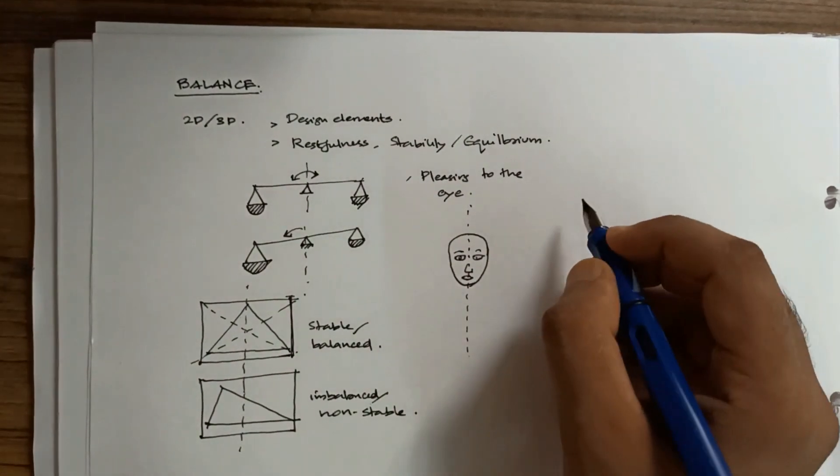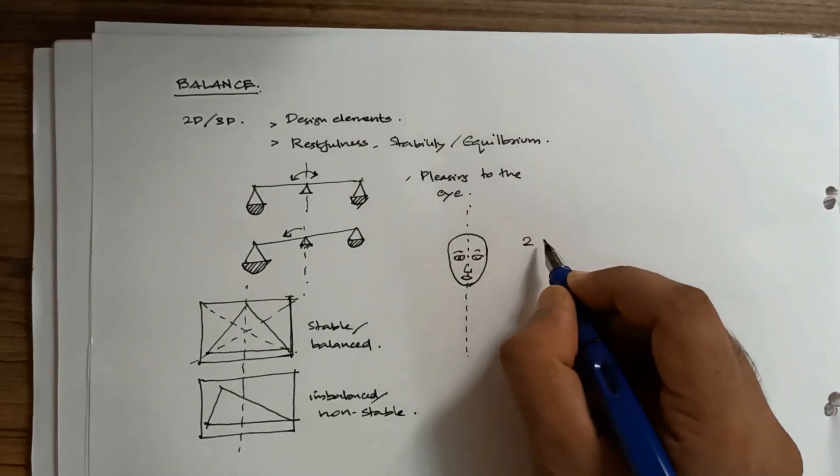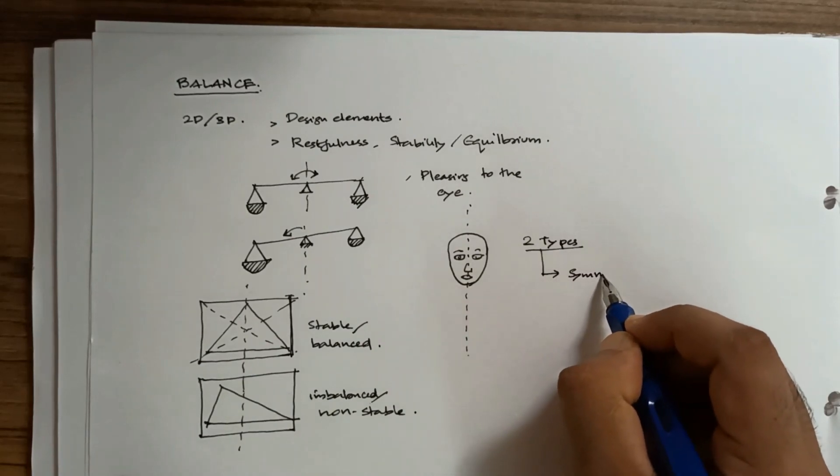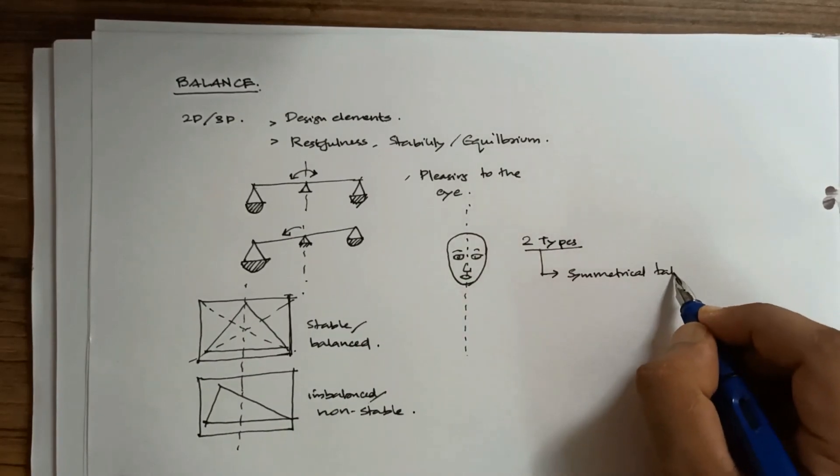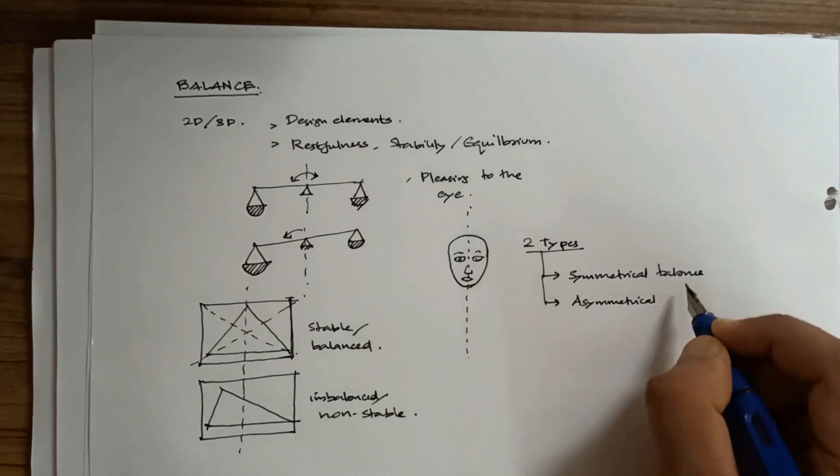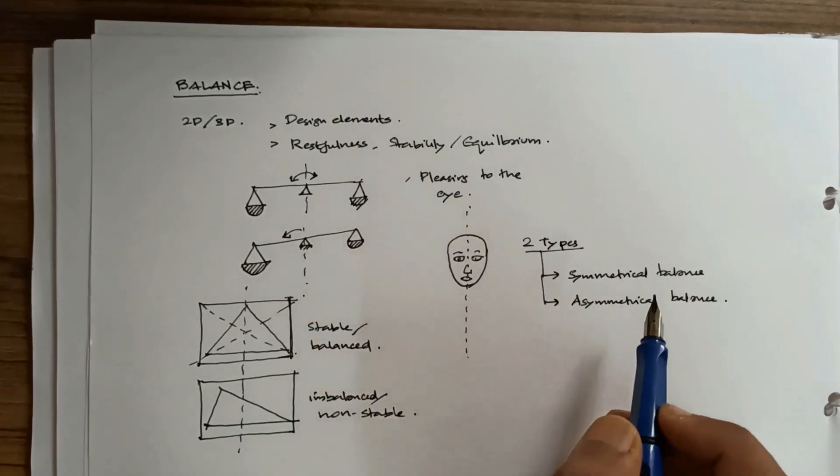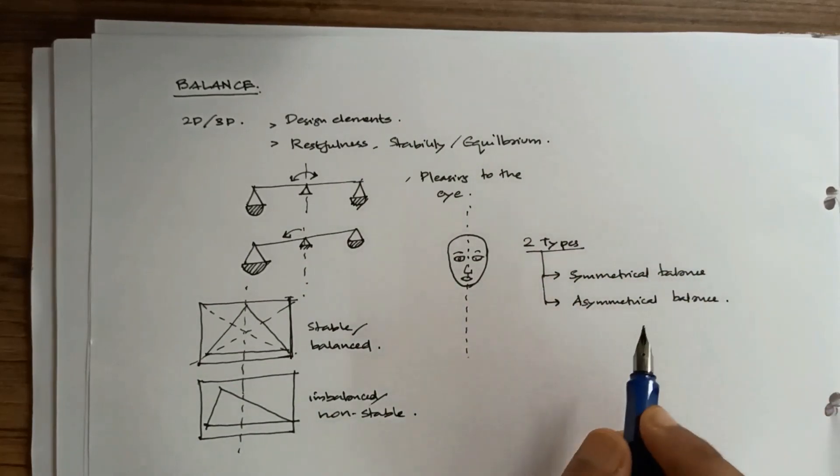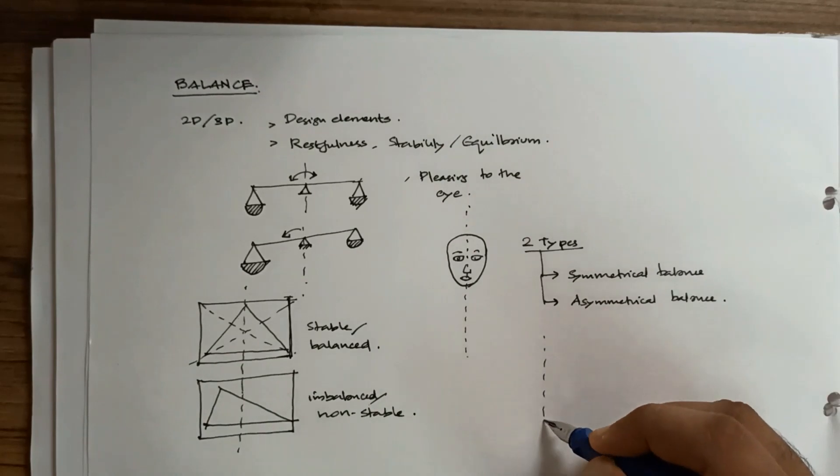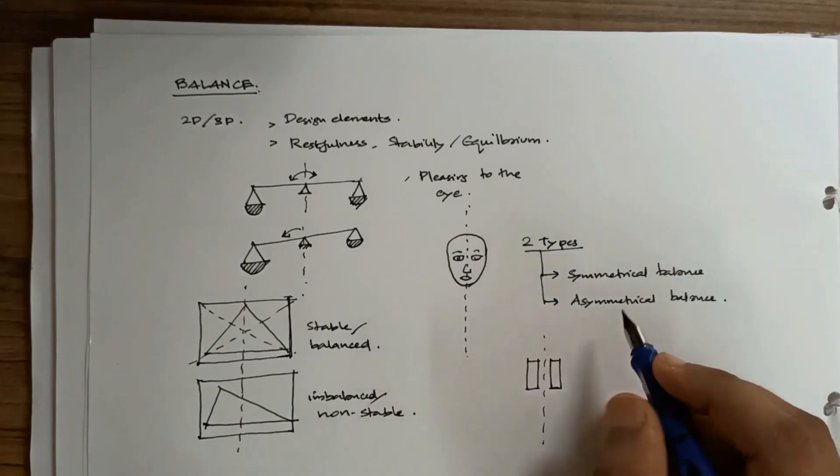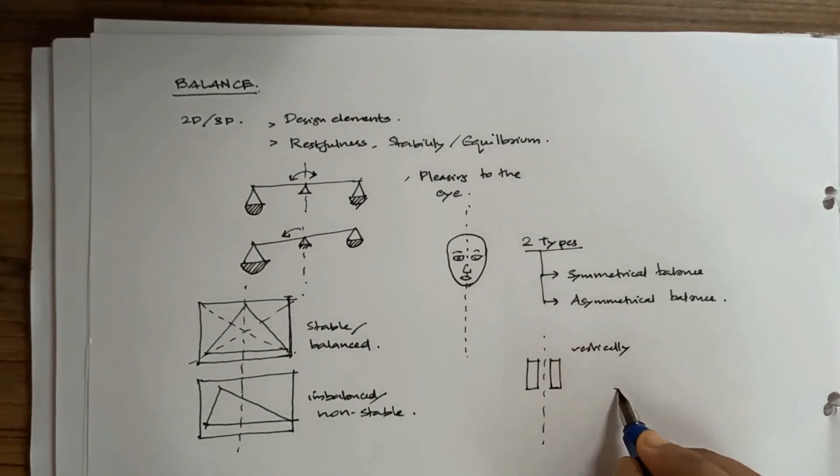Now let's discuss the types of balance. Basically there are two types: symmetrical balance and asymmetrical balance. I think symmetrical balance we would be able to understand. By definition, symmetrical balance means we will have an axis and forms will be evenly distributed on either side of it, either vertically or horizontally. It's like a mirror image.